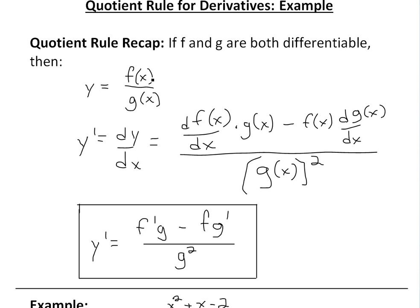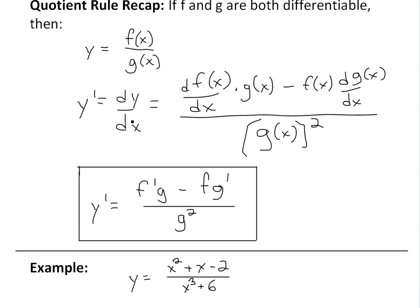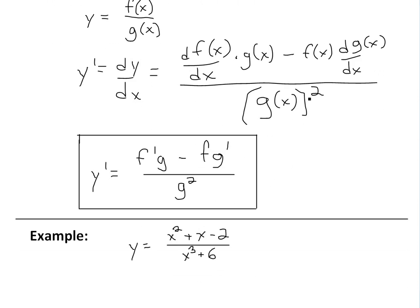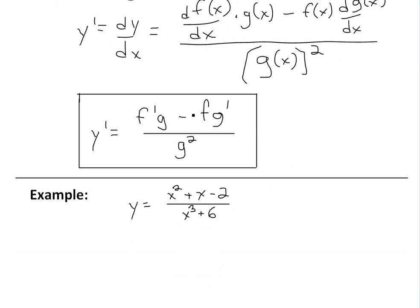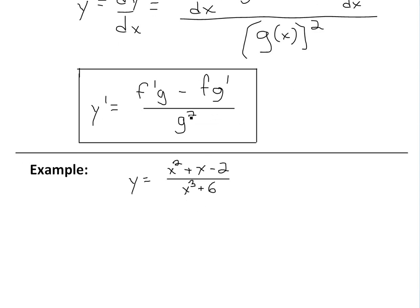then if you have y equals f(x) divided by g(x), then the derivative y prime, or dy/dx, equals the derivative of f(x) times g(x) minus f(x) times the derivative of g(x), all divided by g(x) squared. Or you can write it down a bit neater: y prime equals f prime times g minus f times g prime, all divided by g squared.